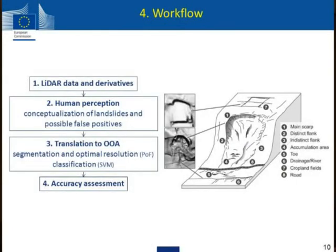So how do we do this? Quite simply, we use our LiDAR data and try to see which derivatives would be useful. How would a human being process this data? What kind of reasoning would we go through step by step to identify these landslides? Then we translate this into meaningful rules that are actually somehow transferable and objective, not entirely location-specific, and then just see how well we do.